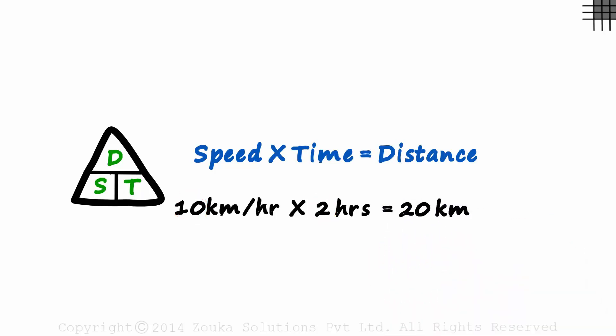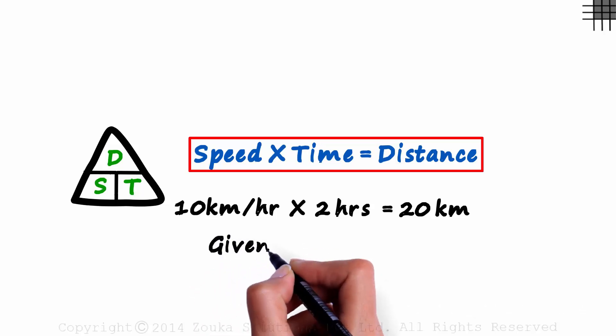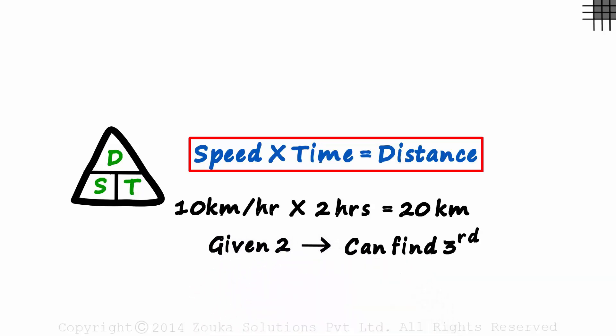Observe that the units are also working out perfectly. Kilometers over hours multiplied by hours—the hours get cancelled and what remains is kilometers. With this formula, if we are given any two parameters, we can easily find the third.